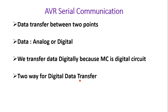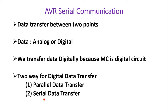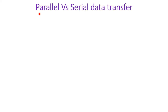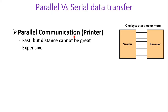There are two ways for digital data transfer: parallel data transfer and serial data transfer. In parallel communication, for example as supported by a printer, there is a sender on one side and a receiver on the other. To transmit 8 bits of data, 8 wires are needed — one for each bit. It is very fast because each bit has its own individual wire.